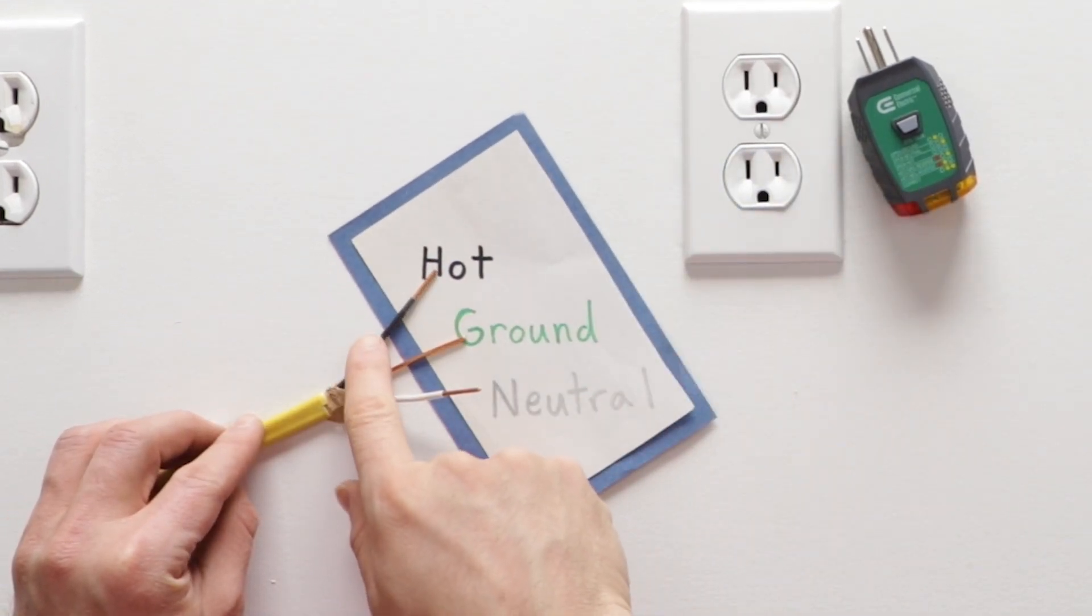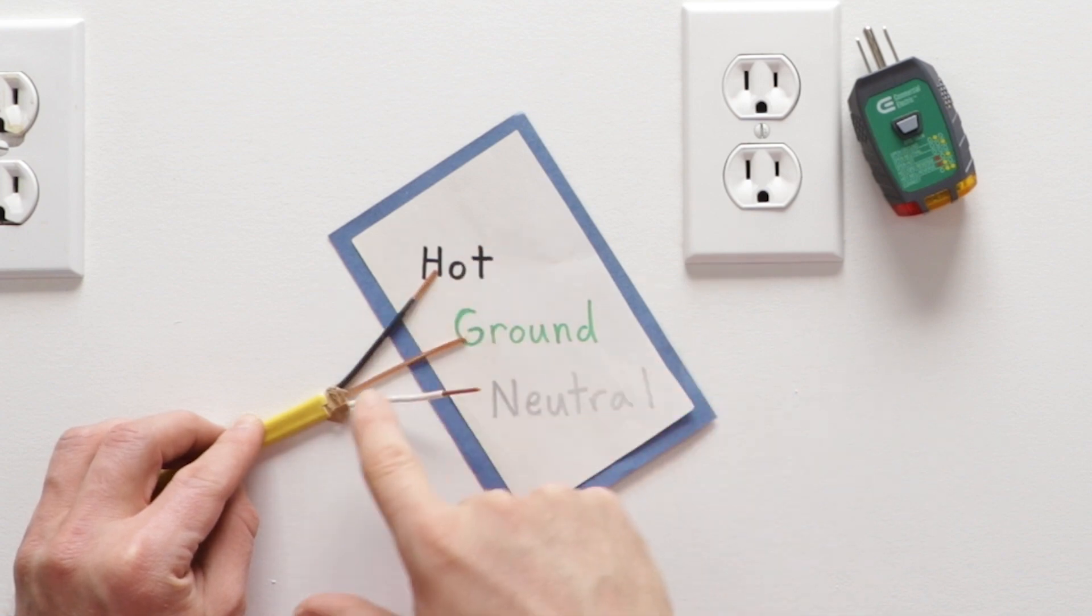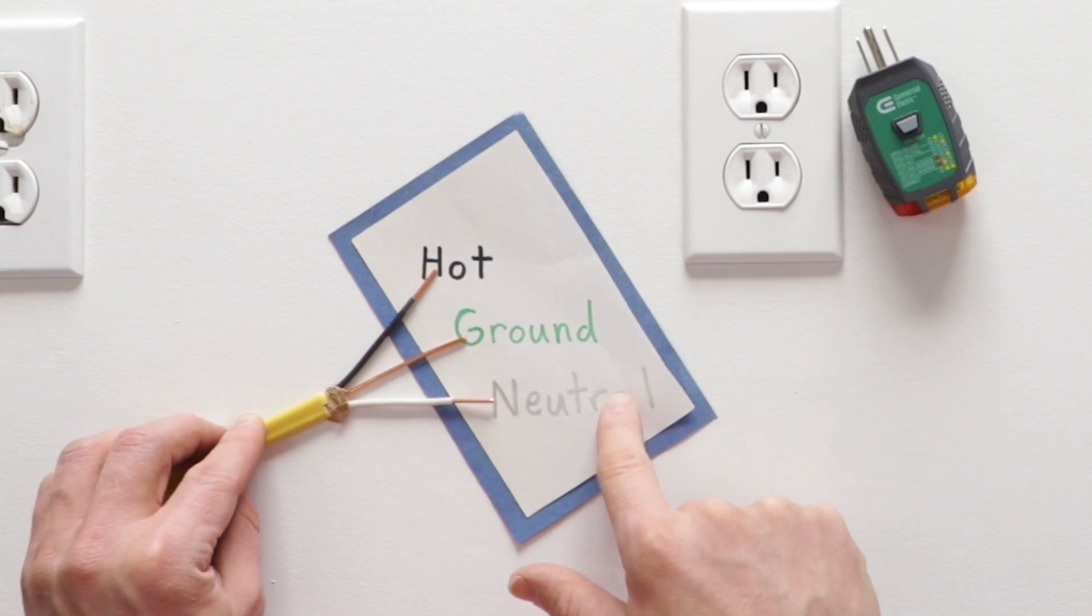Here we have hot, which is black, bare copper, which is ground, and then white, which is neutral.